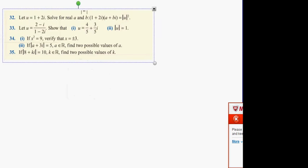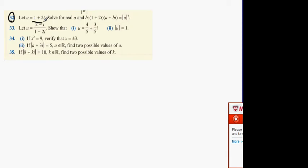Let u be equal to 1 + 2i. Show that for real a and b, 1 + 2i equals a + bi equals the mod of u squared.